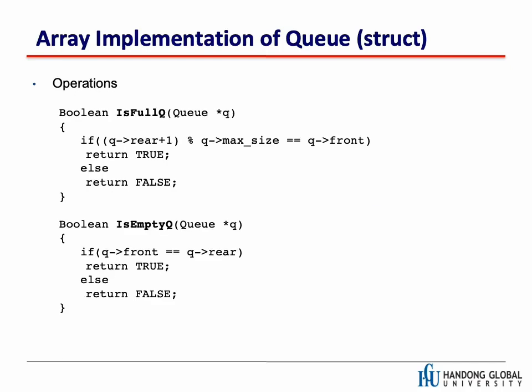The isFullQueue function checks if (rear + 1) % max_size equals front and returns true if so, otherwise false. The isEmptyQueue function checks if front equals rear, returning true if the queue is empty, otherwise false.